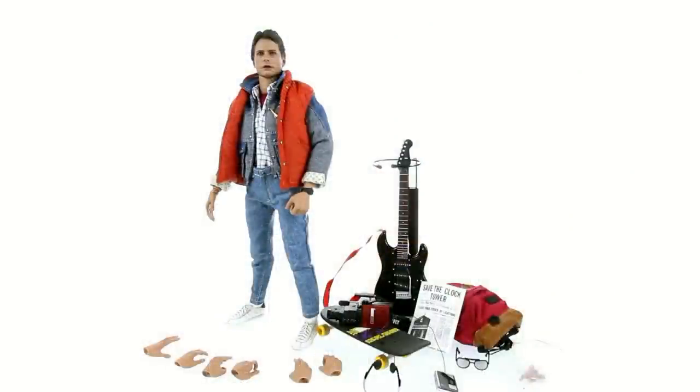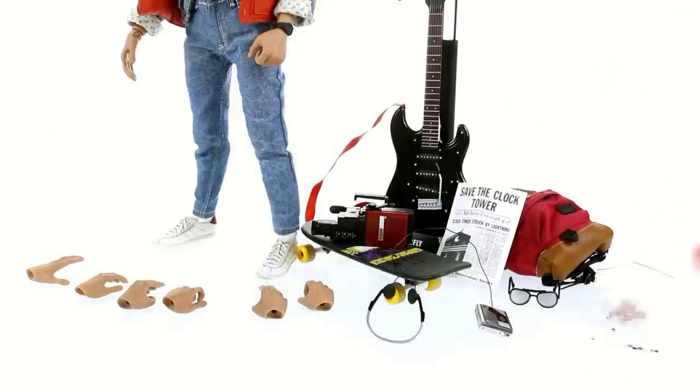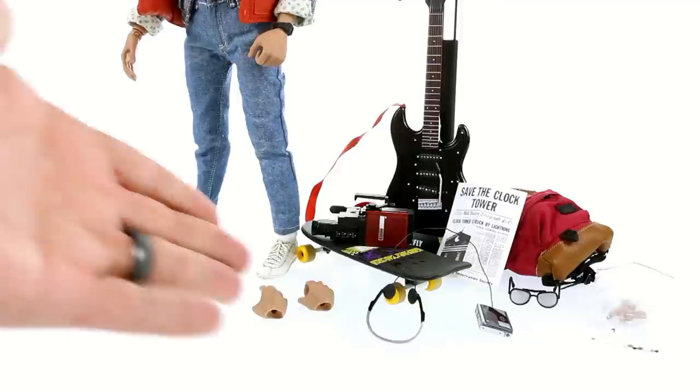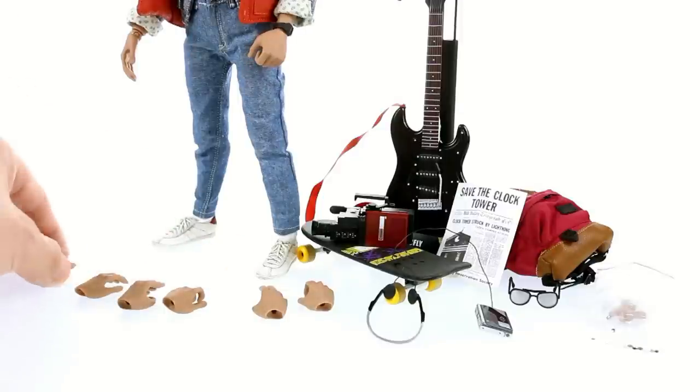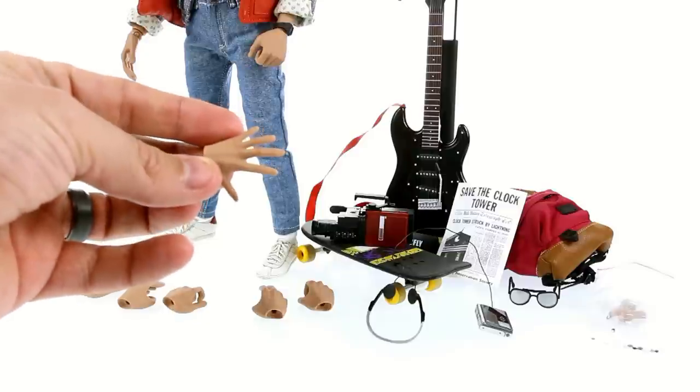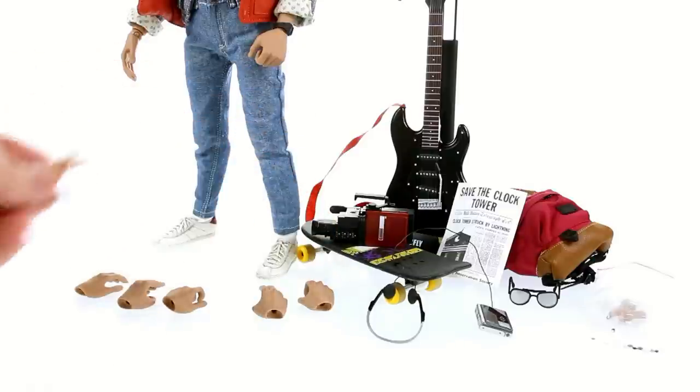Here we have Marty McFly opened up and out of his packaging. As always, taking a look at his accessories first. He comes with a fairly good amount. In addition to the more relaxed hand that's currently on him as well as the fist, he comes with a few other hands. He's got a left hand that's designed here kind of in an open palm, probably more to maybe replicate how he would have his hands positioned if he's riding a skateboard.